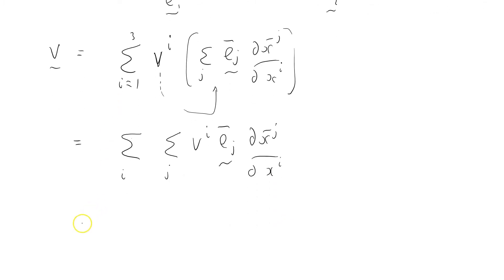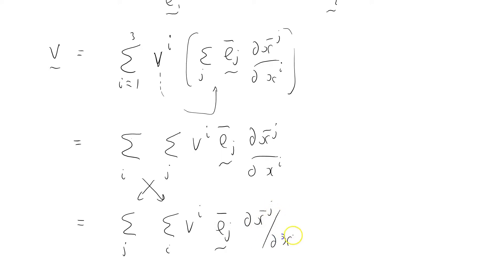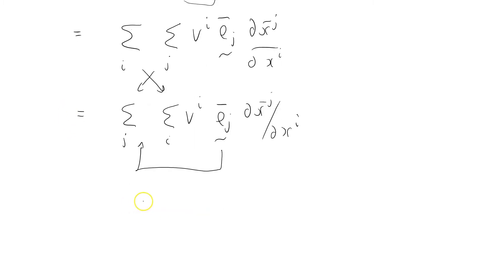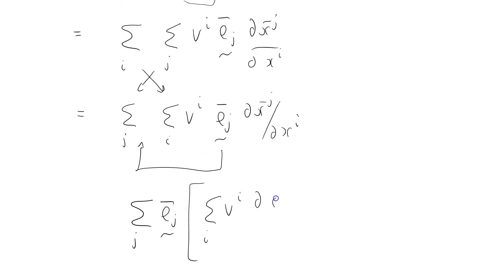Now I'm going to swap the order of summation. So it becomes sigma over j, sigma over i, vi, e_j bar, dx bar j by dx i. Then I'm going to pull the e_j bar out front: sigma over j, e_j bar times sigma over i of vi times dx bar j by dx i. And that equals v.